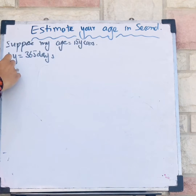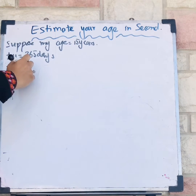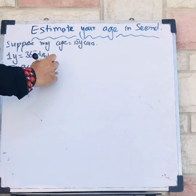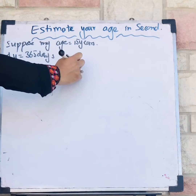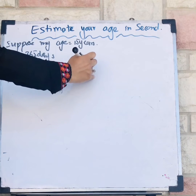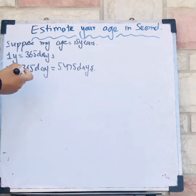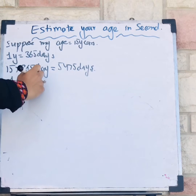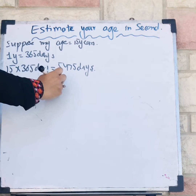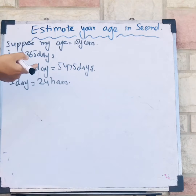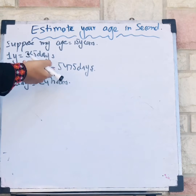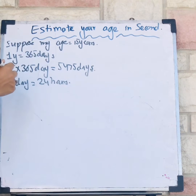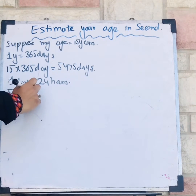15 × 365 days gives 5,475 days. Now, one day is equal to 24 hours, so I am going to multiply 24 with 5,475 days.